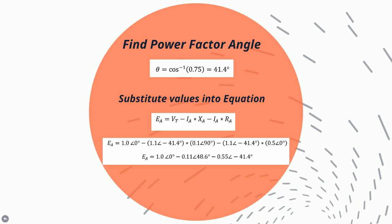The motor reactance value is given as 0.1 per unit, and we assign an angle of 90 degrees, since reactance is purely imaginary. The current value was described previously, and the resistance was given as 0.5 per unit with an angle of 0 degrees, since the resistance is purely real.